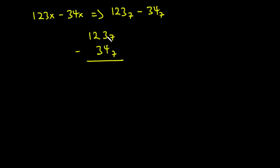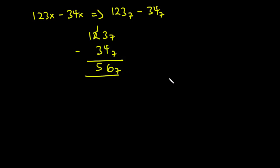In the units column, 3 minus 4: since 4 is greater than 3, we borrow from the 2. In base 7, whatever you borrow is 7, so we get 7 plus 3 which is 10, and 10 minus 4 is 6. The 2 becomes 1. In the next column, 1 is less than 3, so we borrow 7 from the 1: 7 plus 1 is 8, and 8 minus 3 is 5. So 123 base 7 minus 34 base 7 equals 56 base 7.